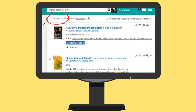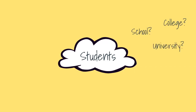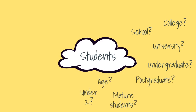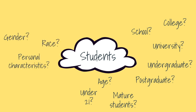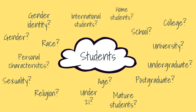How could you narrow this down? You could start by thinking about what you mean by students. Do you mean school, college or university? What type of students are you interested in? Does age matter? What other demographics might be important? Are you interested in students of a particular gender, race or sexuality, for example? How about where they're from? Think about all the variables that could affect your research.